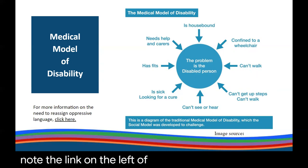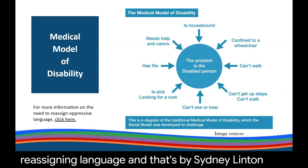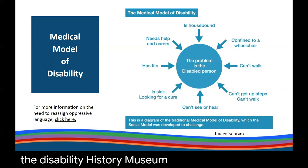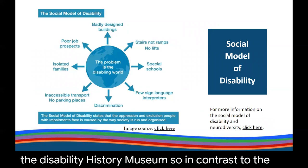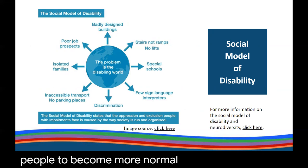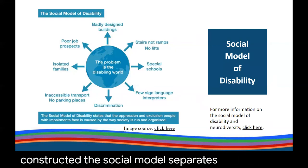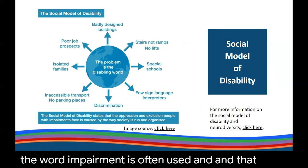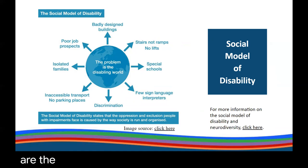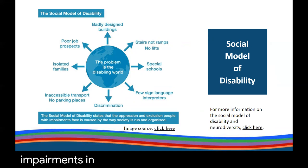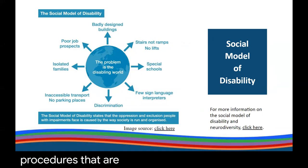There is a link on the left of this slide for further reading — a wonderful piece called 'Reassigning Language' by Cindy Linton from the Disability History Museum. In contrast to the medical model, which tries to remediate and fix people through disability labels, the social model of disability shifts the focus from disability as a deficit to disability as socially constructed. The social model separates impairment — the person's functional limitations — from disability, which refers to the barriers imposed on a person. The social model recognizes that societal barriers turn impairments into disability.